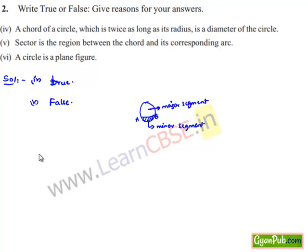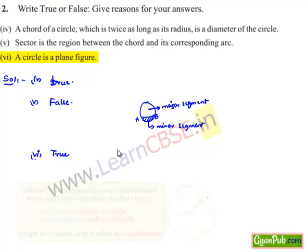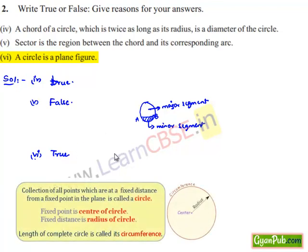Moving on to the sixth bit: a circle is a plane figure — that is true. Because by definition, a circle is a collection of all points in a plane which are at a fixed distance from a fixed point in a plane, confirming that it is indeed a plane figure.